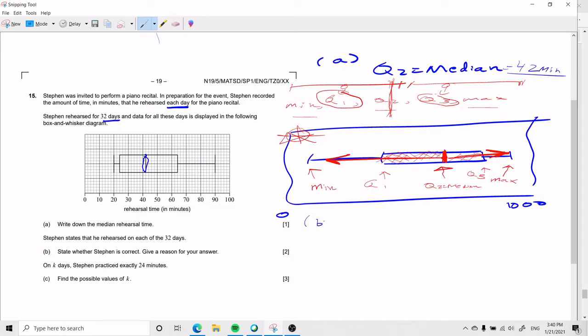Now, part B says that Stephen states that he rehearsed on each of the 32 days. State whether Stephen is correct, and give a reason for your answer. As I well stated in the explanation before, the box and whisker plot gives us the value of a minimum, right? Amongst other things.